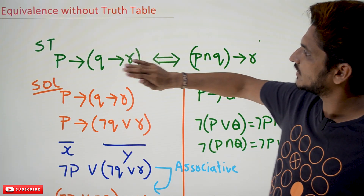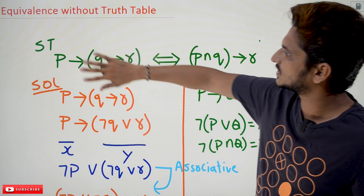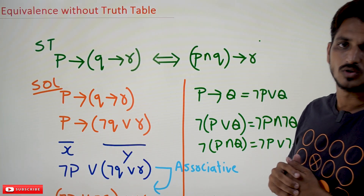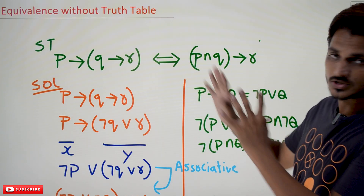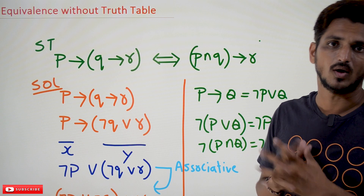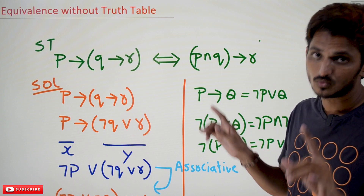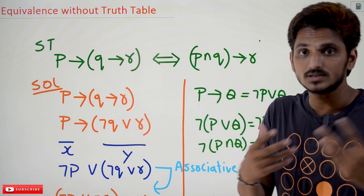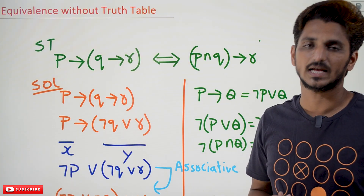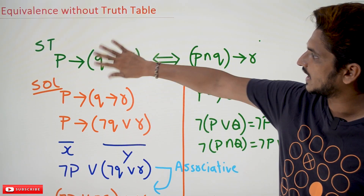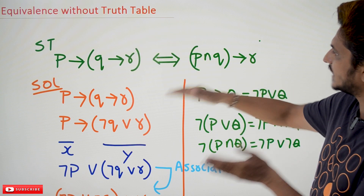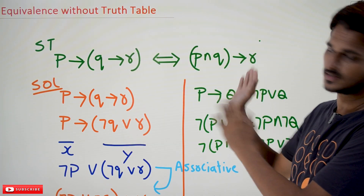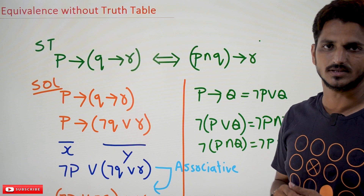Coming to this, they have given two propositions — this is one proposition and this is the second proposition. We need to show that these two propositions are equal without constructing the truth table. We can use the equivalence formulas which we discussed in our previous classes. We have to take the LHS and derive it as RHS, or take the RHS and show it as LHS.